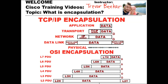The TCP/IP updated model calls the headers, data, and trailers certain terms depending on what layer you're on. Here's an example of the TCP/IP encapsulation model. In this model, you can see that we have the physical, data link, network, transport, and application layer. These headers, data, and trailers are all referred to as certain terms depending on which layer you're on.